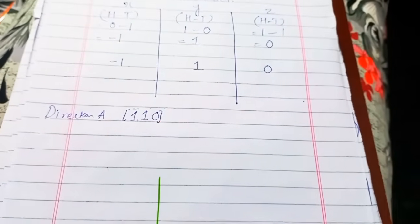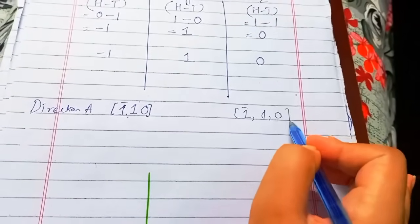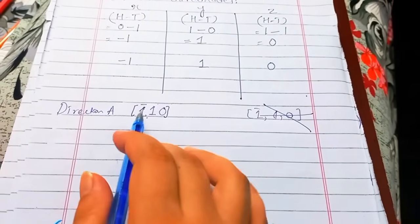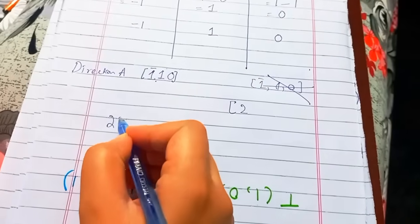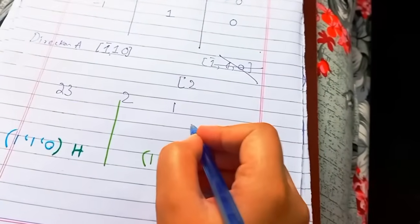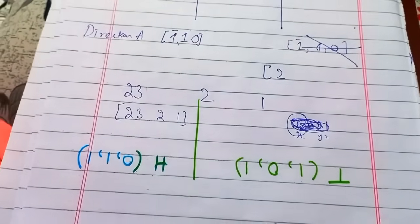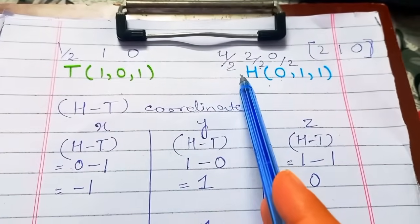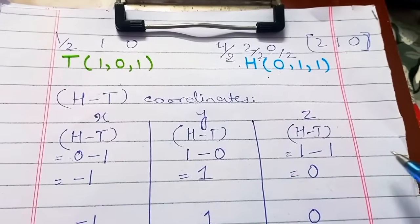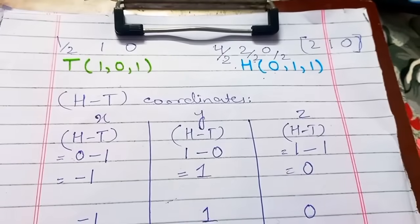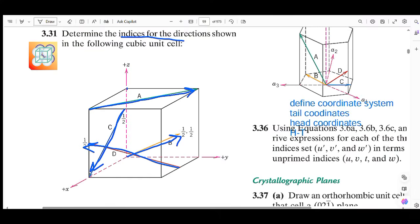In Miller indices notation, never put commas between the indices — that is wrong. If indices are multi-digit, like 2, 3, 2, 1, use spaces to differentiate them. Also, when reducing fractions or simplifying, always multiply or divide by a positive number only — dividing by a negative number is not allowed.